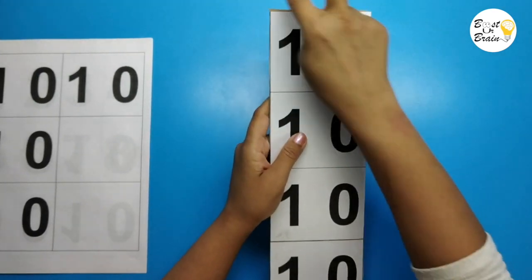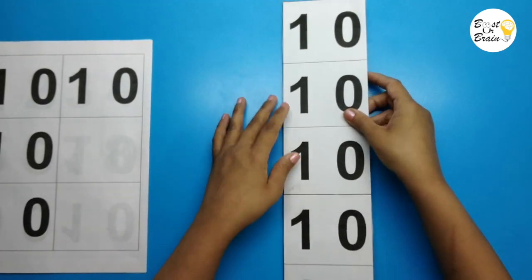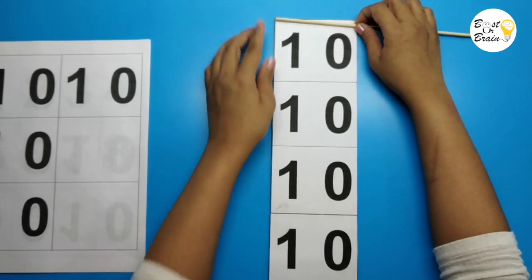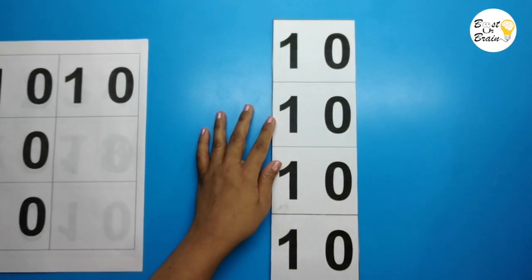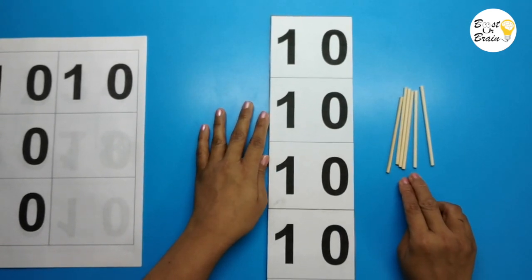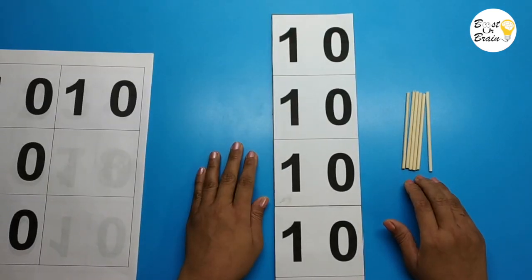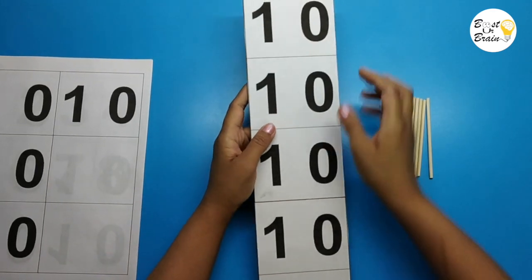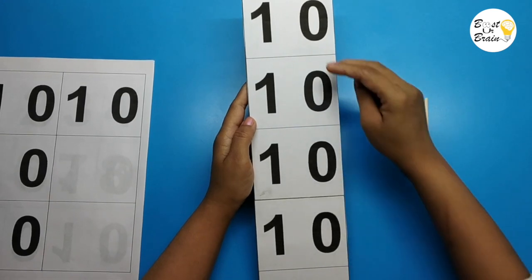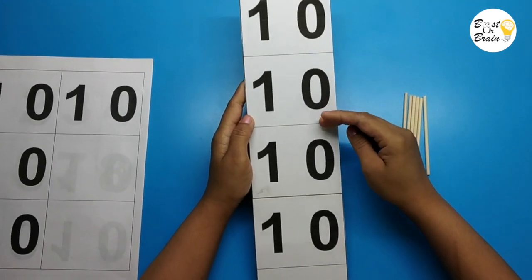Measure the width of the board and cut the bamboo stick of the same length. I have already cut them. We need 6 pieces of bamboo stick for the first teen board. Now stick it on both ends of the board and also in between each number.